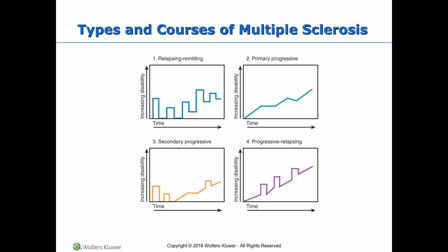The types and courses of multiple sclerosis: The first is relapsing remitting, or RRMS, characterized by clearly defined acute attacks with full recovery or with sequelae and residual deficit upon recovery. Periods between disease relapses are characterized by lack of disease progression.